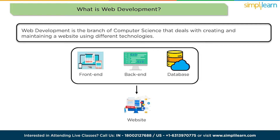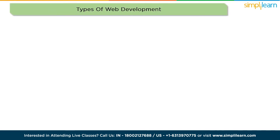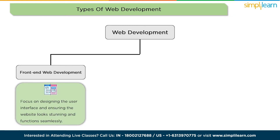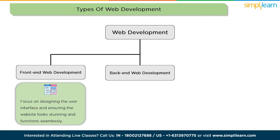Now let's take a closer look at the different types of web development. The first is front-end web development — this is where creativity shines. Front-end developers focus on designing the user interfaces and ensuring the website looks stunning and functions seamlessly. They use HTML for structure, CSS for styling, and JavaScript for interactivity.